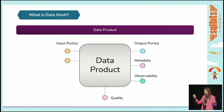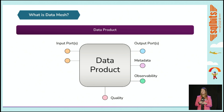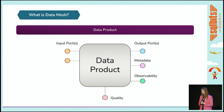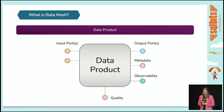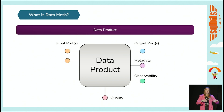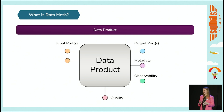If we dig into the technical parts, a data product needs input parts — you need to pull data into your product. You need output parts so people can access it in a standardized way. You need metadata to make it easier to manage, and you should know about observability: where it's coming from, when it was updated, its timeliness, and data quality — to make it easier for others to trust.